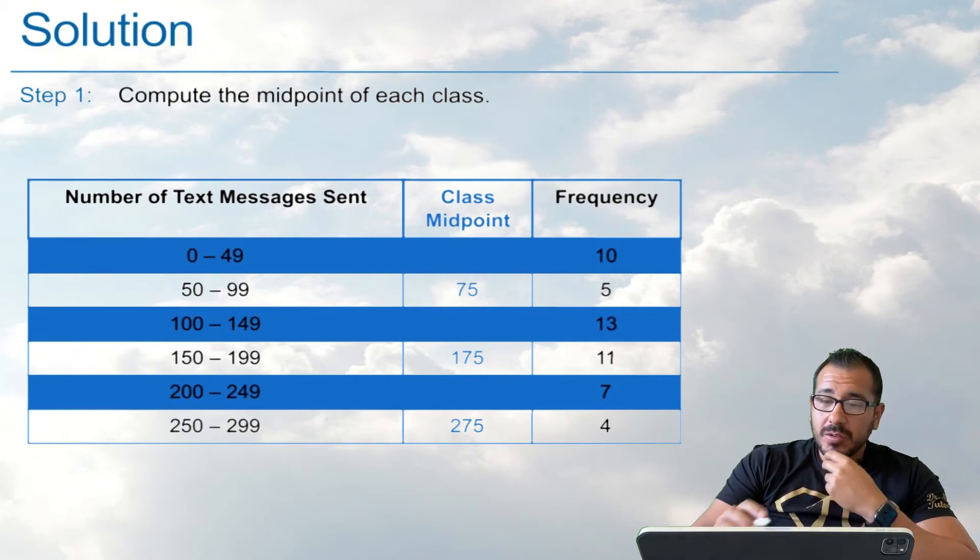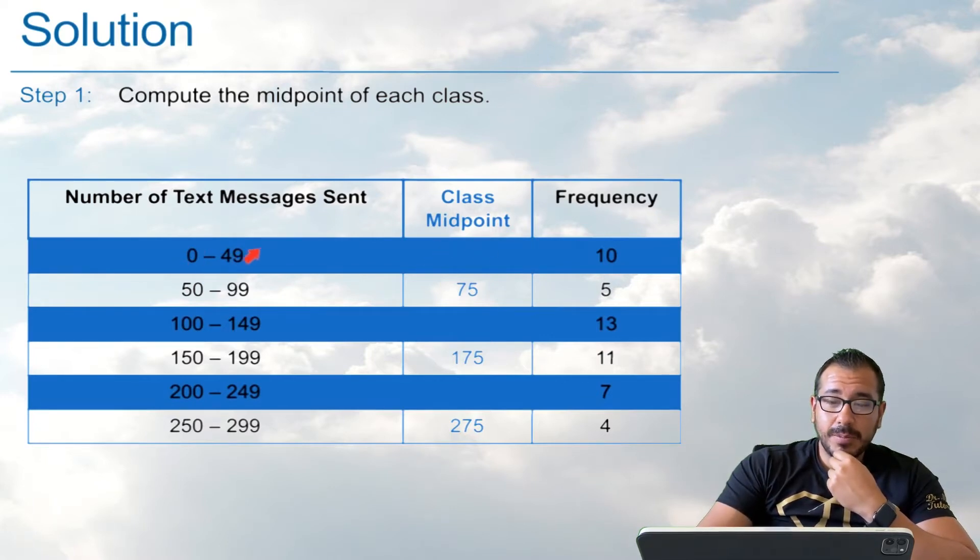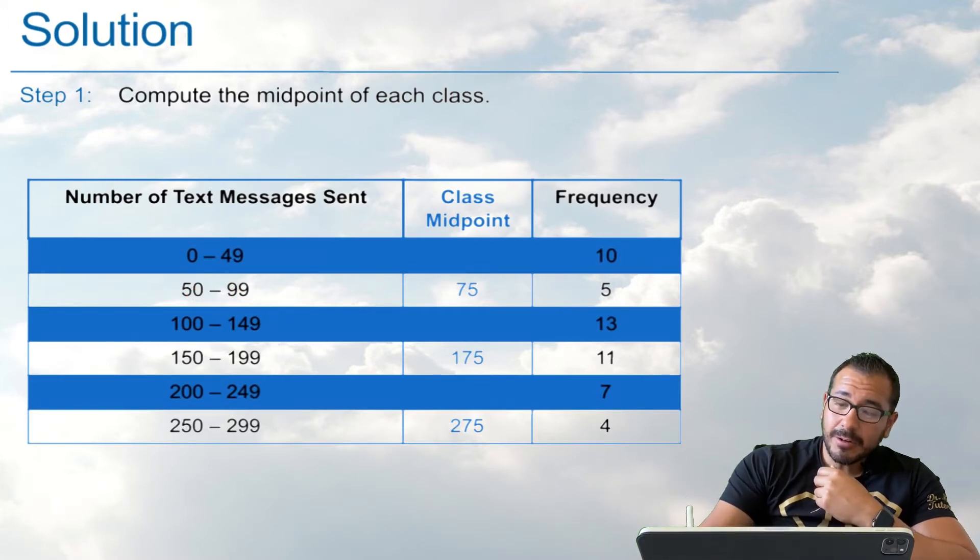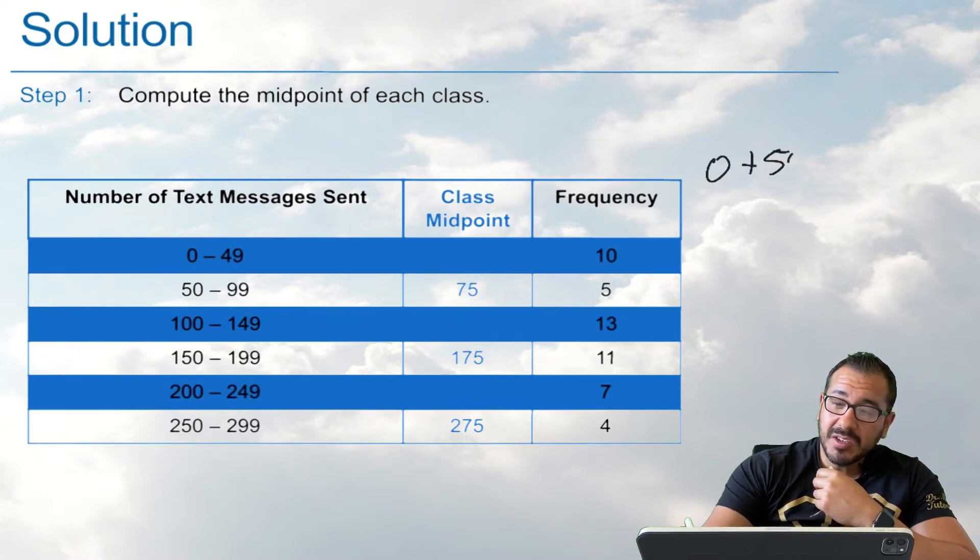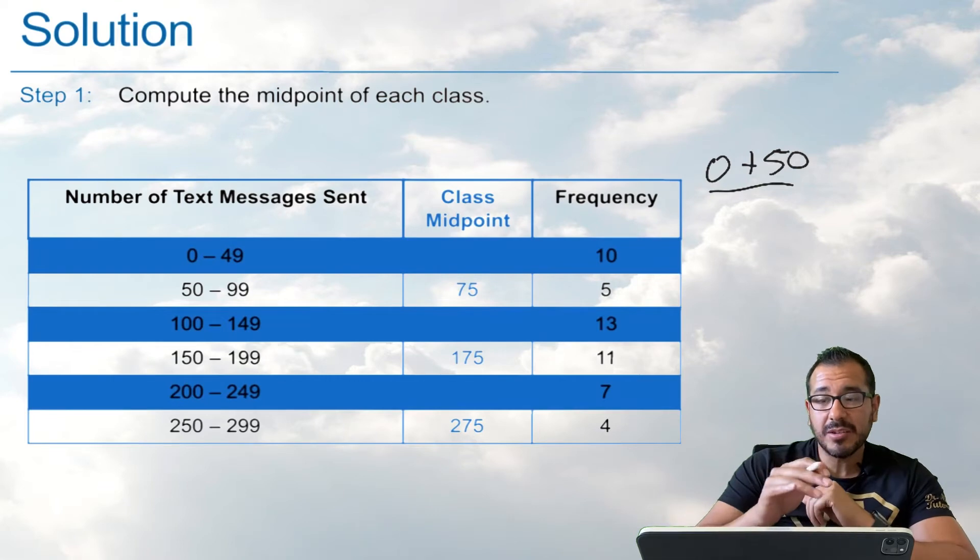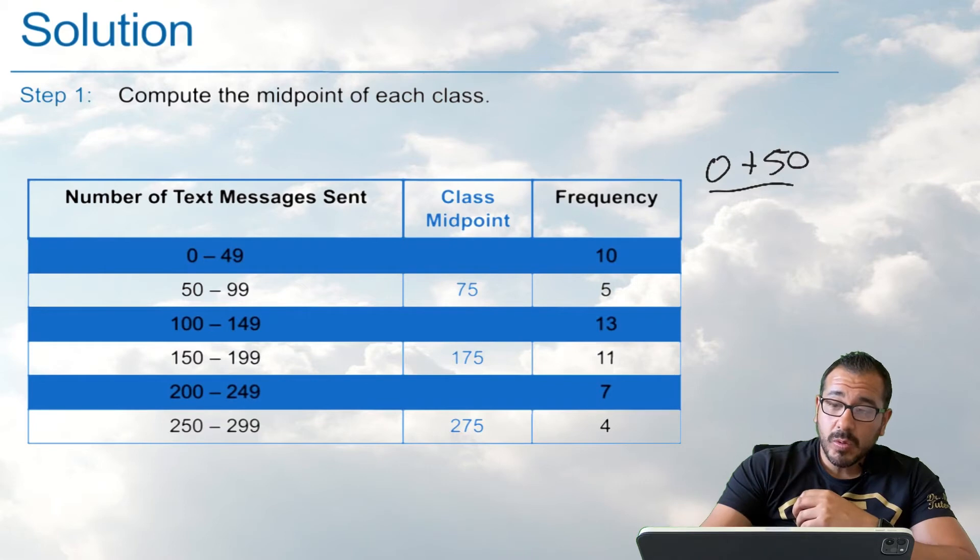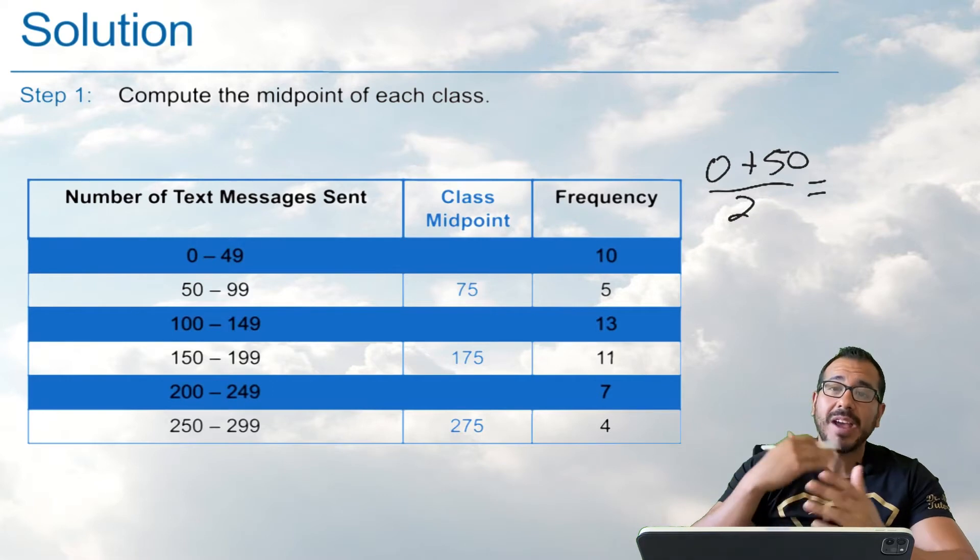So what we're going to do, if you're looking at the notes, you take that lower class limit, right? Say if I want this class midpoint of this class right here, what I'm going to do is I'm going to take this lower limit right here, the 0, and I'm going to add the next lower class limit. So I look at this next class and I'm going to take its lower class limit, which is 50. So I'm going to take that 0 and I'm going to add 50 to it. And if you're doing this in the calculator, go ahead and press Enter. 0 plus 50. And then you're taking the average of those two. So we're going to, of course, divide that by 2.